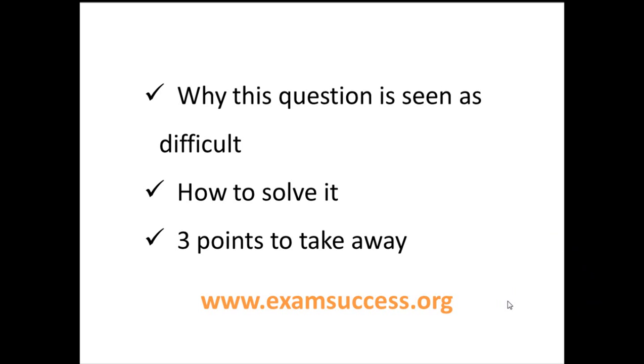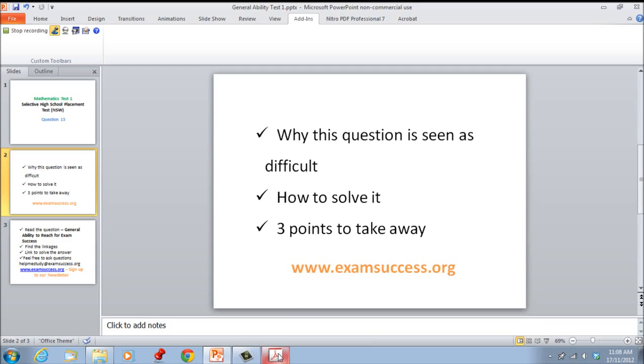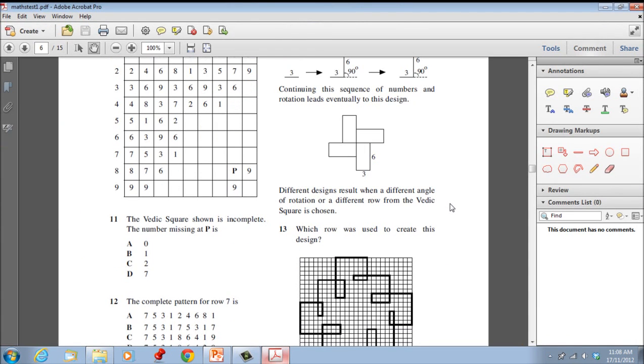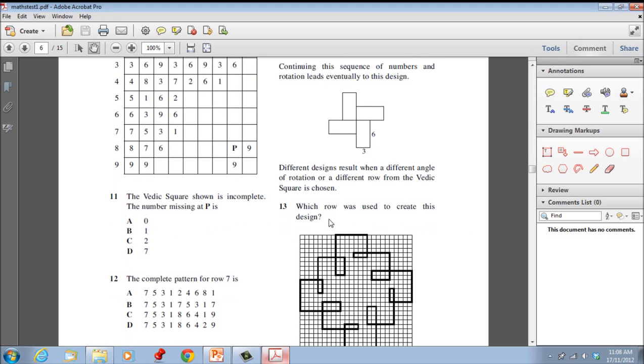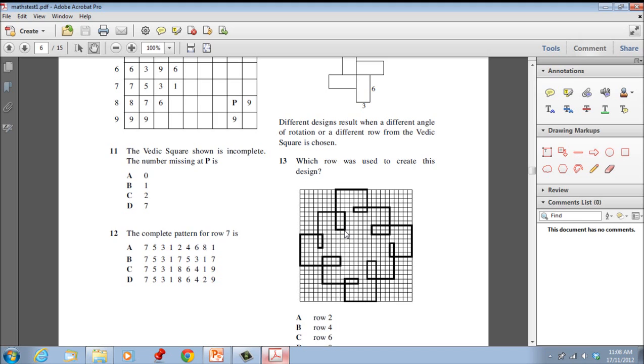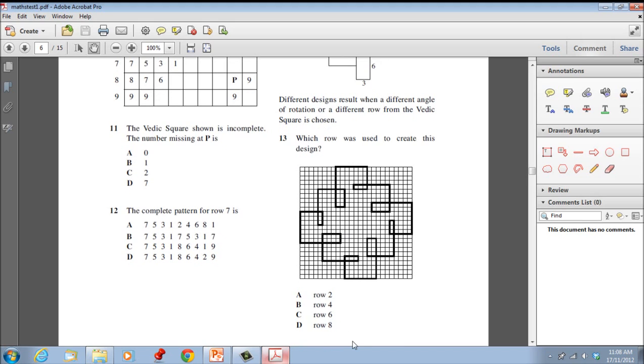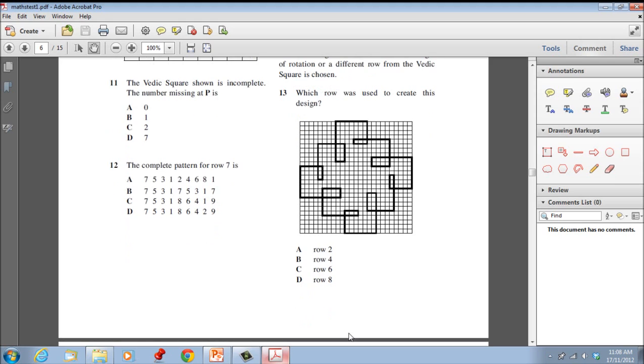So let's go to the actual exam paper. Let's go through question 13. I'll go through slowly how I would answer this question while pointing out the difficulties, and you'll see how it gets solved. Question 13 says which row was used to create this design? It gives us four options: row 2, row 4, row 6, row 8.